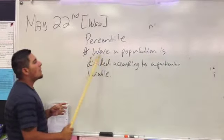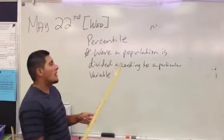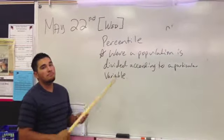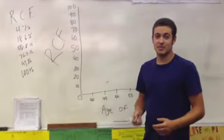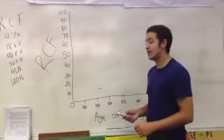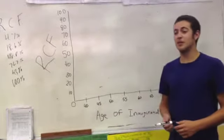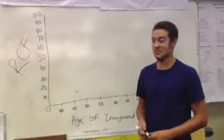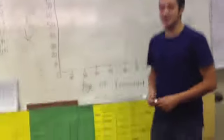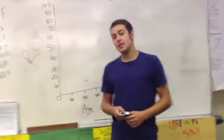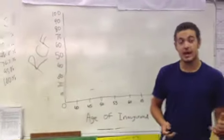A percentile is where a population is divided according to a particular variable. Now to give a better perspective of percentile and ogives, we thought we could do a problem - a problem we've all done thanks to Mr. E's great teaching. Right, Mr. E? Right it is. Anyway, it's going to be the Bill Clinton president problem: was he a young president?